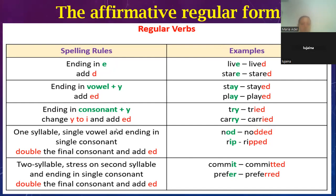This is the regular verb. To summarize: we normally add ED; if the verb ends with E, just add D; if the verb ends with consonant + Y, remove Y and put IED; if there is a consonant after a vowel at the end, double the consonant before adding ED.